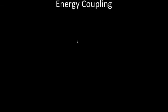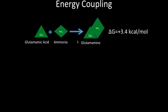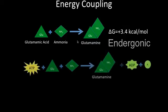Here's a simple demonstration of how energy coupling works. Imagine an endergonic reaction occurring. For instance, building an amino acid molecule from glutamic acid and ammonia to make glutamine. This simple reaction requires 3.4 kilocalories per mole of energy and is endergonic. So it's not spontaneous. It will not just happen on its own.